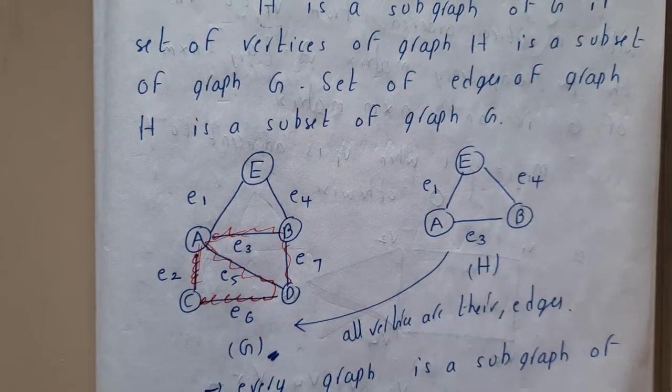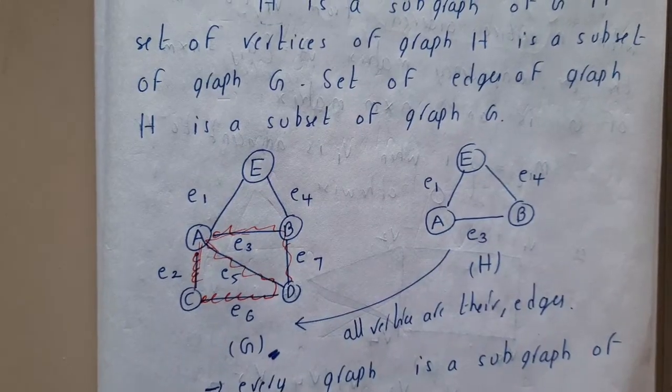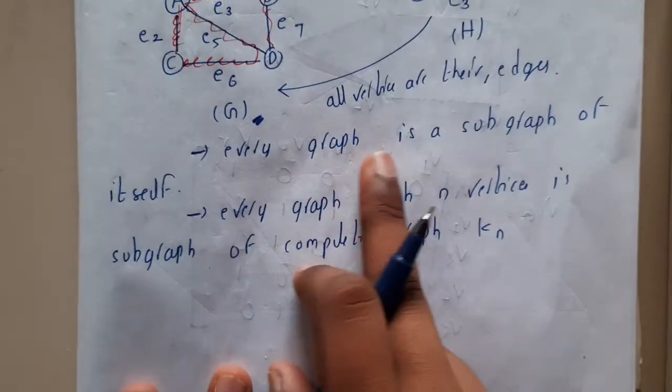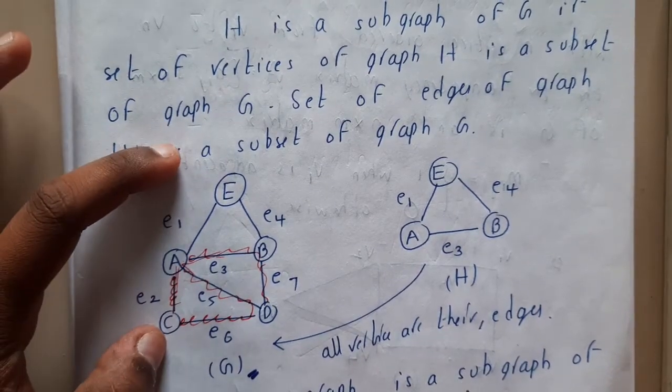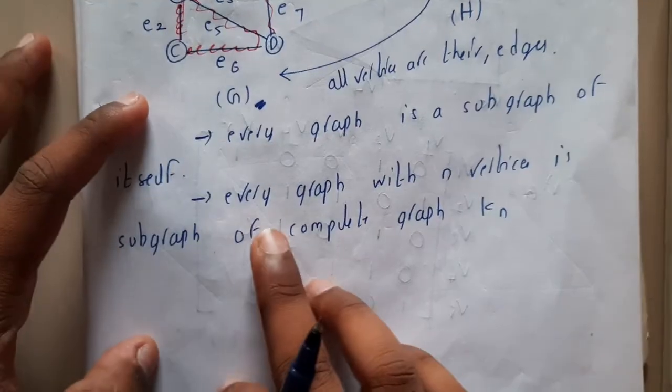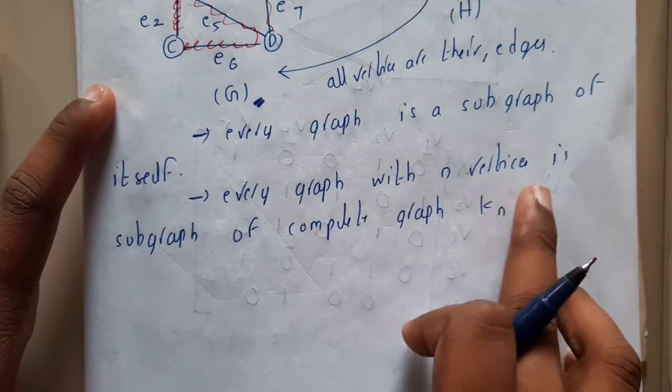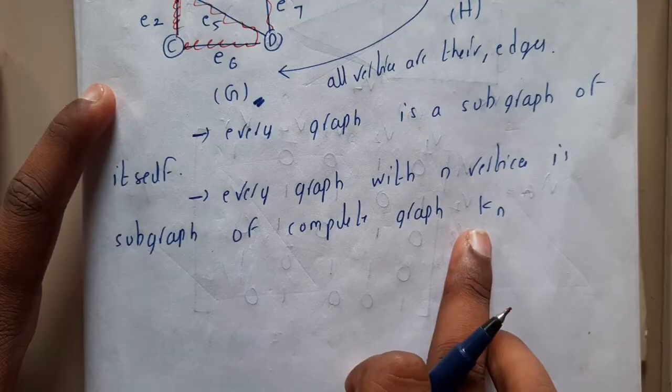Every graph is a subgraph of itself. So if someone says that this is a graph and this is a subgraph, is it true? Yes, that is true. Every graph with n vertices is a subgraph of complete graph K of n.